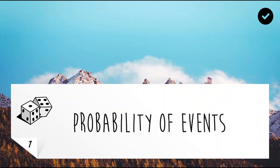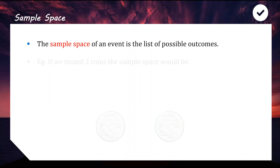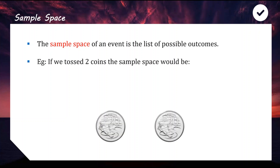Starting our new topic — a brief overview of basic probability of simple events. The first key concept is the sample space of an event. Sample space refers to all possible outcomes. For example, if tossing two coins at once, the sample space has three options: two heads, two tails, or one head and one tail.